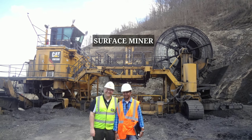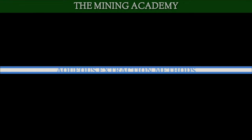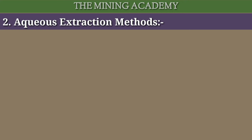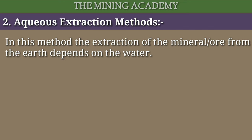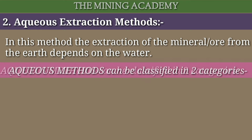Yahan surface mining ki mechanical extraction method khatam hoti hai. Ab baat karte hain surface mining ki doosri method — aqueous extraction method. Yah surface mining ki doosri method hai. Is method mein kisi bhi ore ya mineral ka extraction water-dependent hota hai. Lagbhag surface mining ka 10% production is method se hota hai. Aqueous extraction method mainly do categories mein classified hai: pehla placer mining, doosra solution mining.